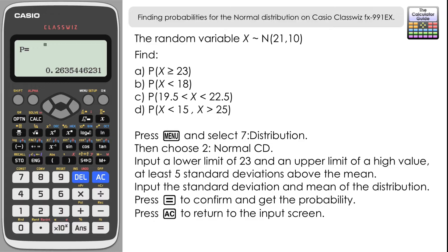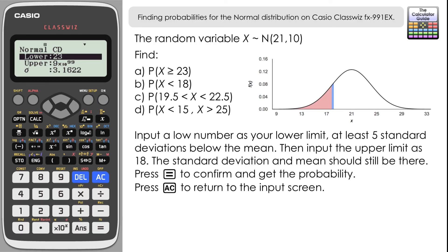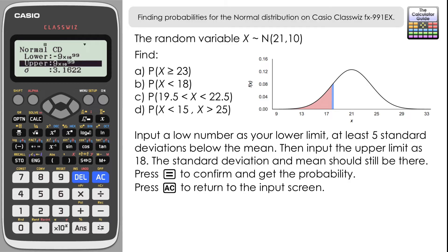For part b, the probability that X is less than 18 — we can still use the cumulative distribution. Press AC to return to the data input screen. Because we're interested in values less than 18, that's on the left-hand side of the graph, the lower tail. For the lower limit, it's a question of how low we can go — let's use minus 9 × 10⁹⁹. Again, you don't have to go that low; just make sure your value is five standard deviations or more below the mean.